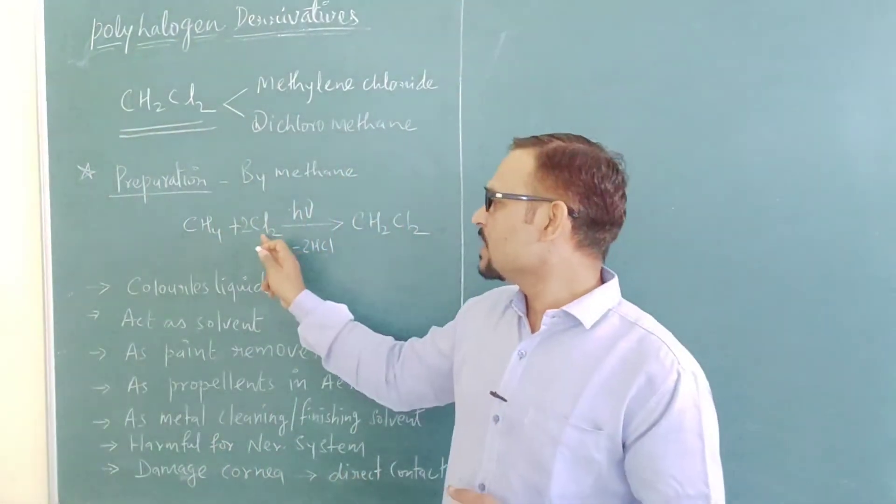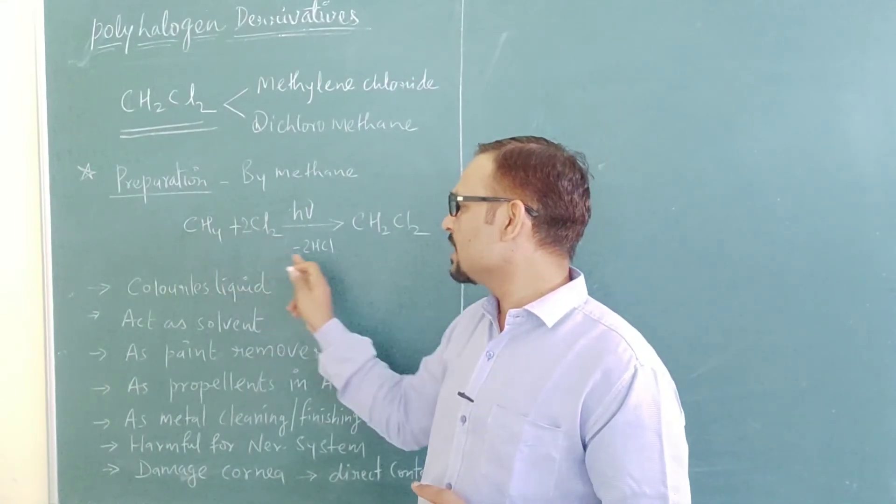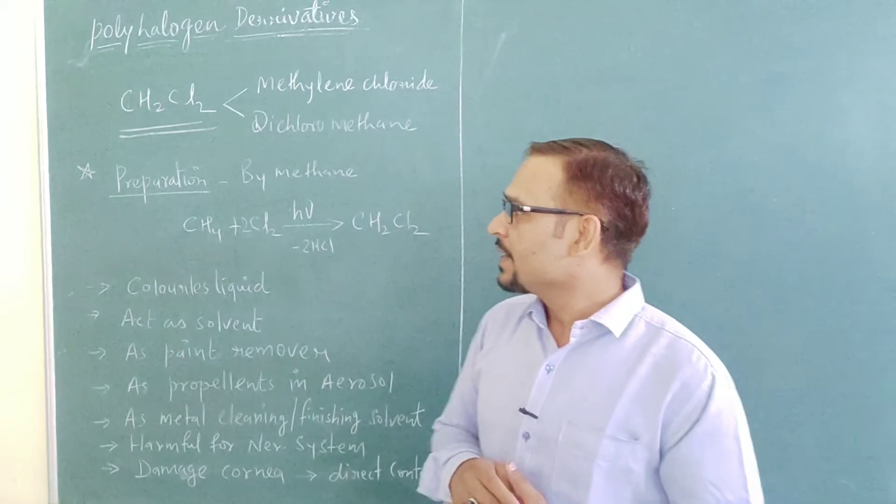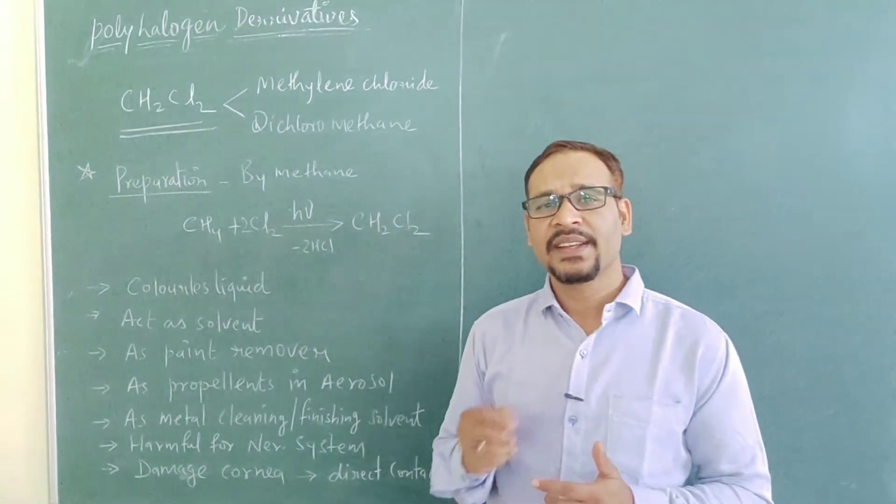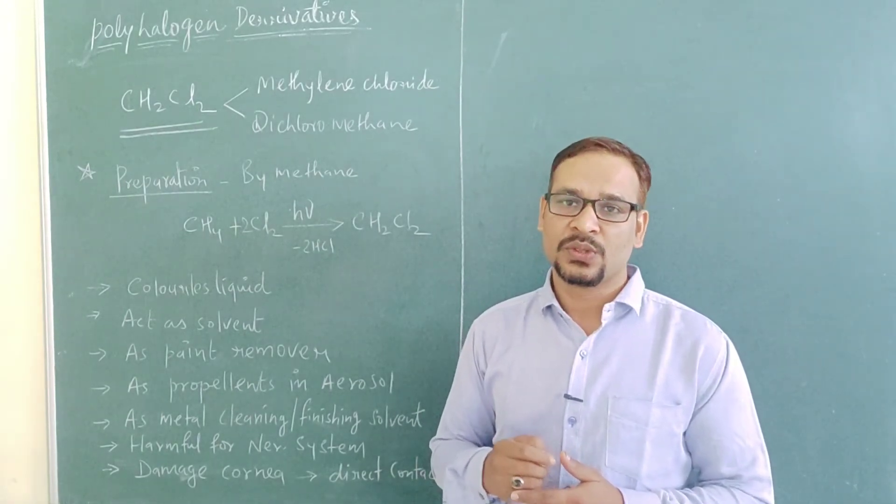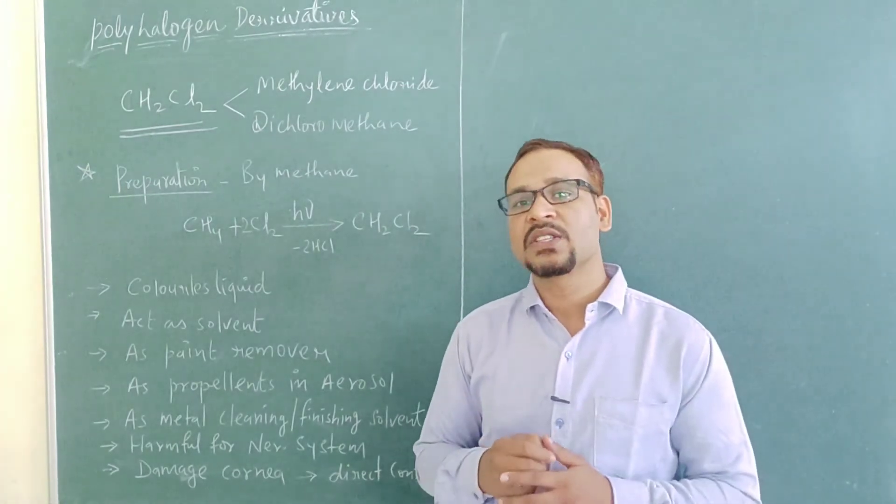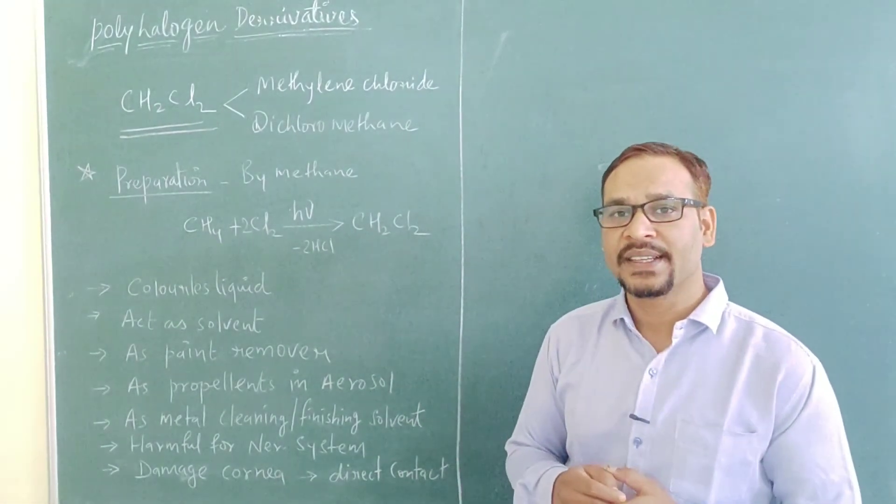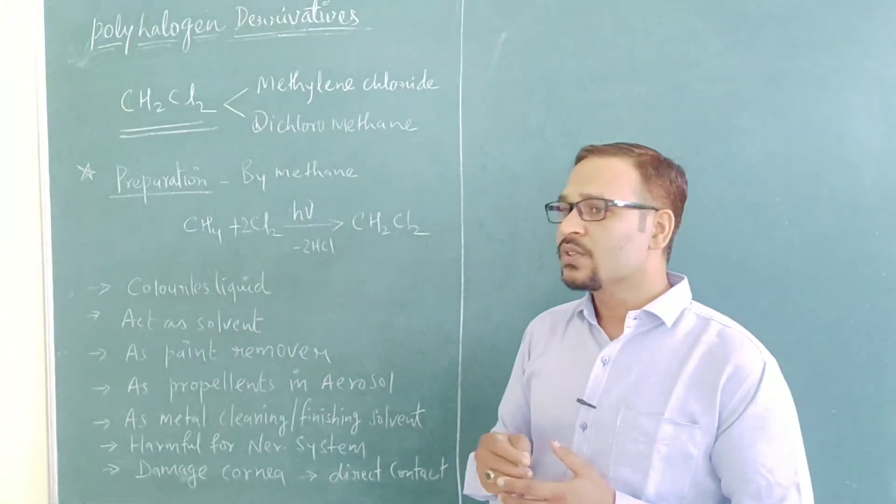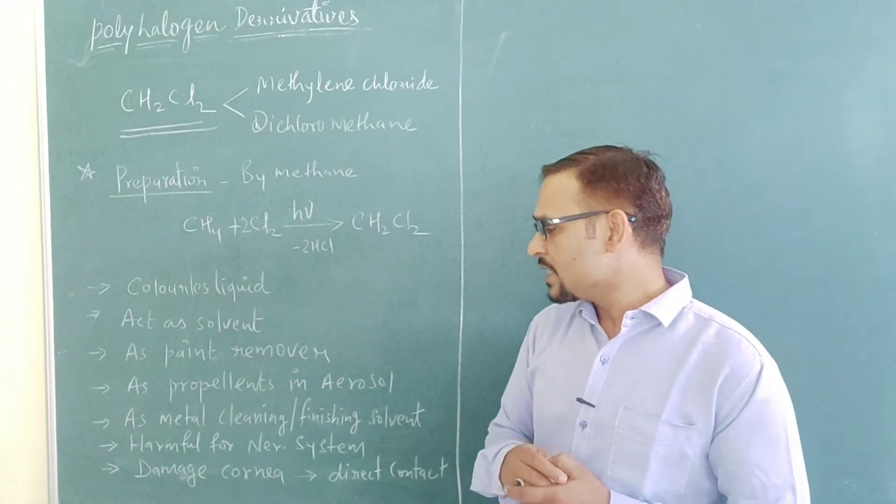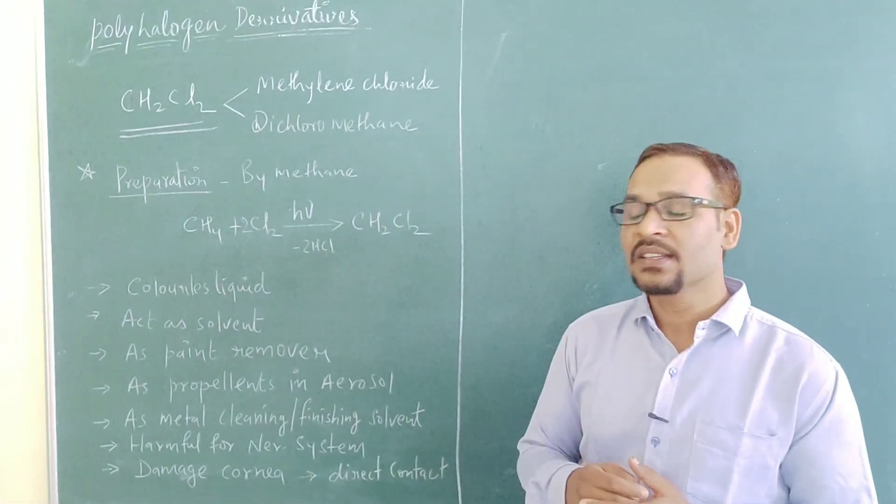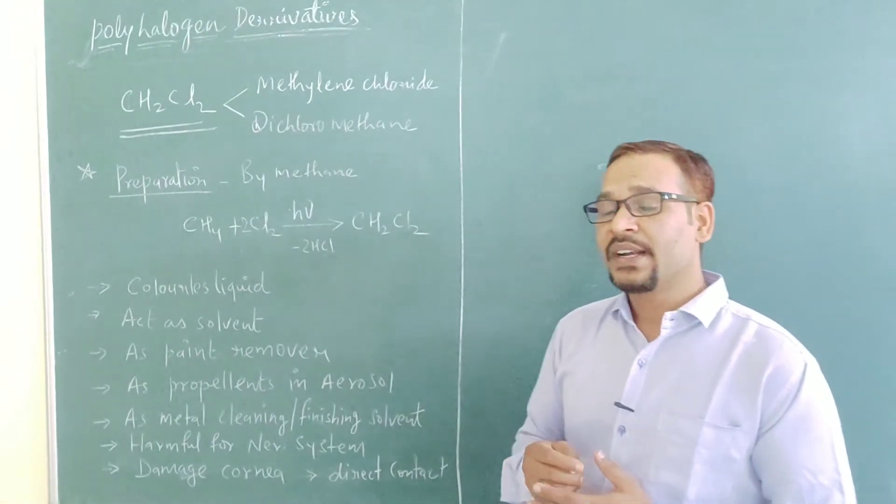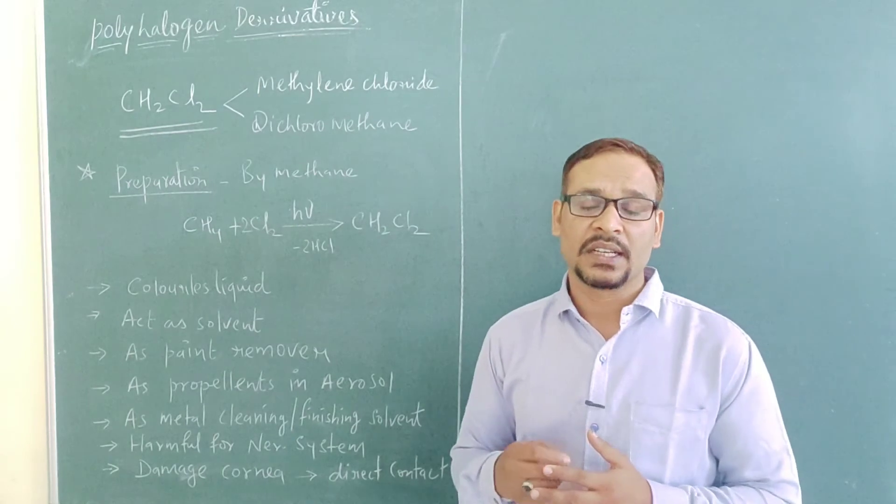Here you can see four atoms of chlorine are there. Two atoms combine with two H and remove HCl. Two chlorine atoms join here and form CH2Cl2. This is how it is prepared. Let's talk about its properties and uses. It is a colorless liquid. It is used as a solvent. It is also used as a paint remover, also used as a propellant in aerosols. Its very important use is used as a metal cleaning or finishing solvent.